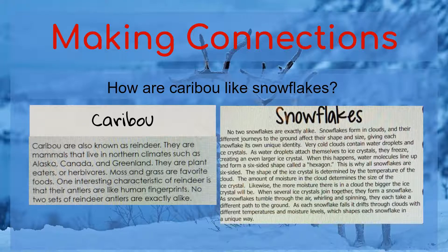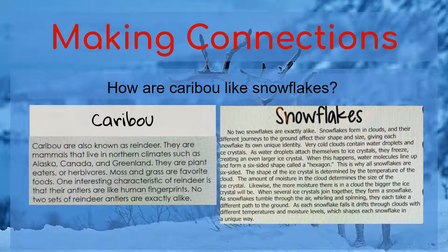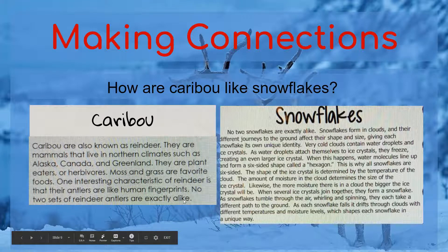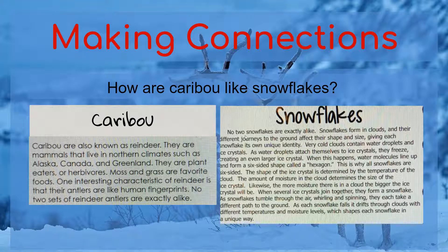Did you notice anything similar between these two passages? I can easily notice things that are different — caribou are an animal, and snowflake is a precipitation. Caribou live in the cold, and snowflakes form in places where it's cold. But I noticed something else that's almost like a theme between these two stories. Here it says 'no two sets of reindeer antlers are exactly alike,' and up here on snowflakes, 'no two snowflakes are exactly alike.' So how are caribou like snowflakes? Caribou's antlers are each unique, like a set of human fingerprints, and snowflakes are each unique — no two are exactly alike.